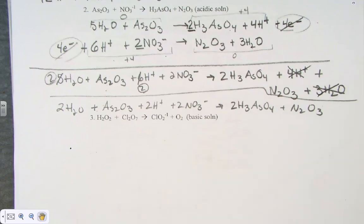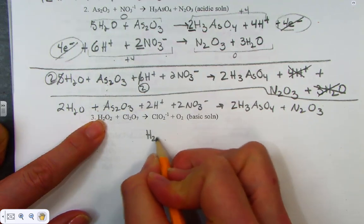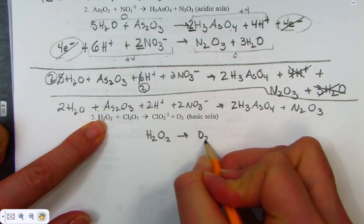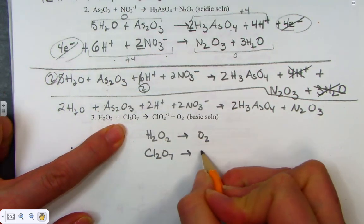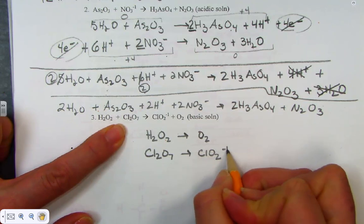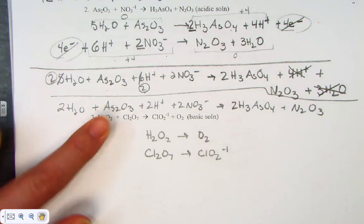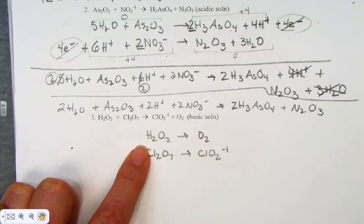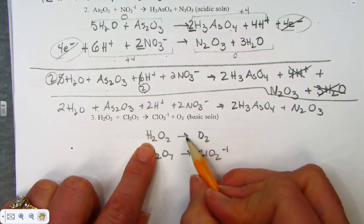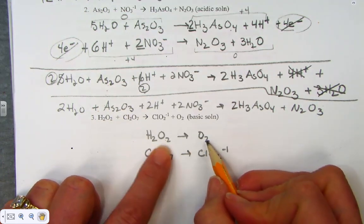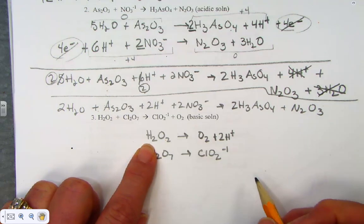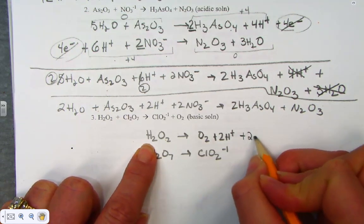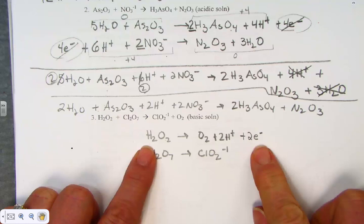We have one more, and that's in a basic solution. Hydrogen peroxide going to oxygen, and dichlorine heptoxide going to the chlorite polyatomic ion. For the first half-reaction, H₂O₂ making molecular oxygen: the oxygens are balanced, so I add 2 positive protons to get the H's, then add 2 electrons to make it electrically balanced.